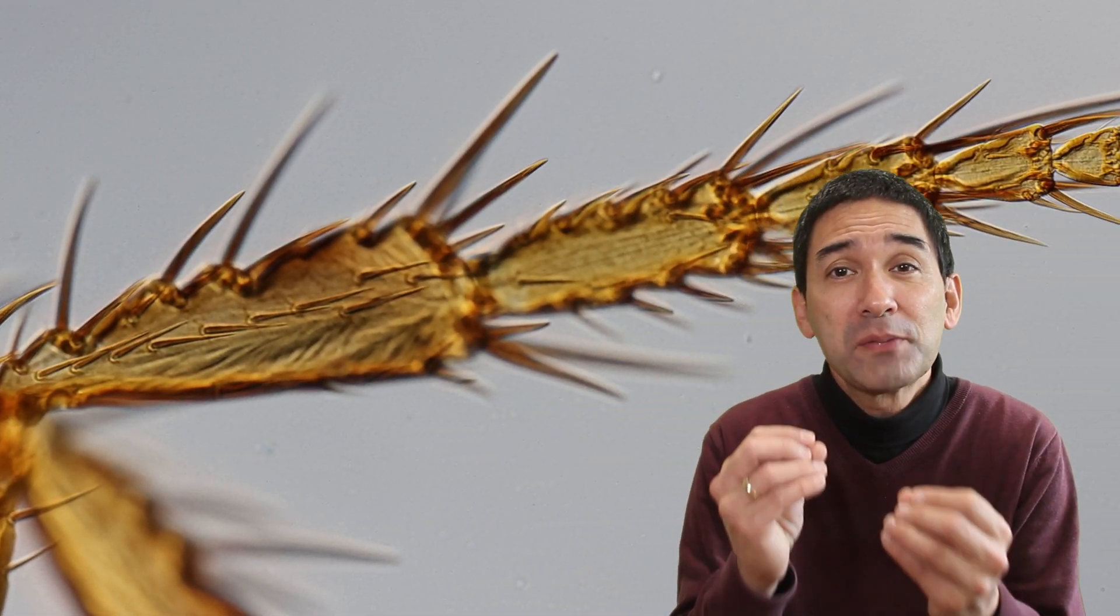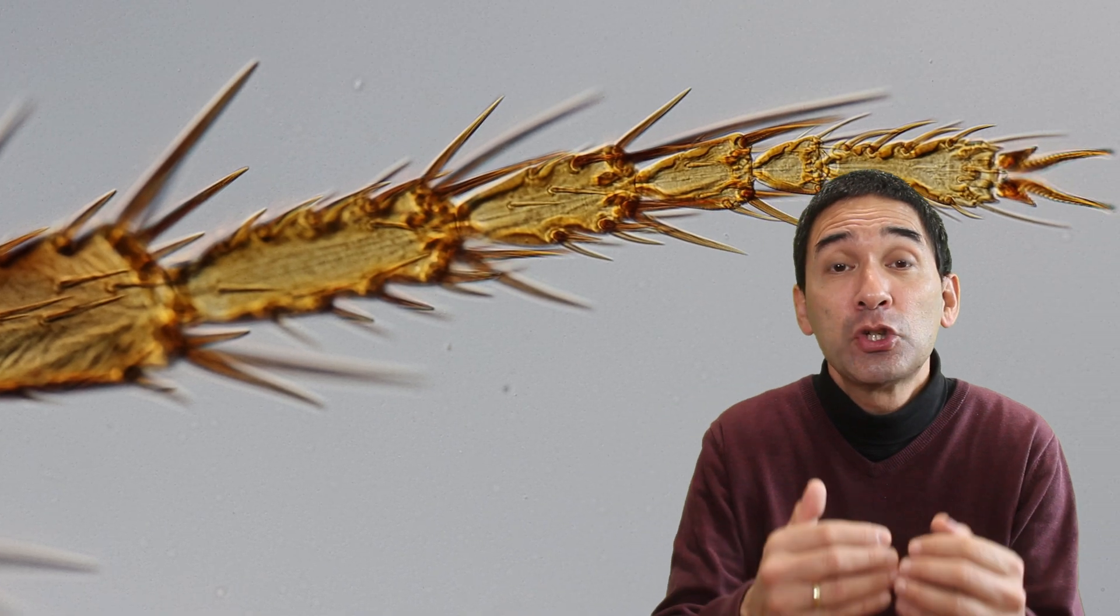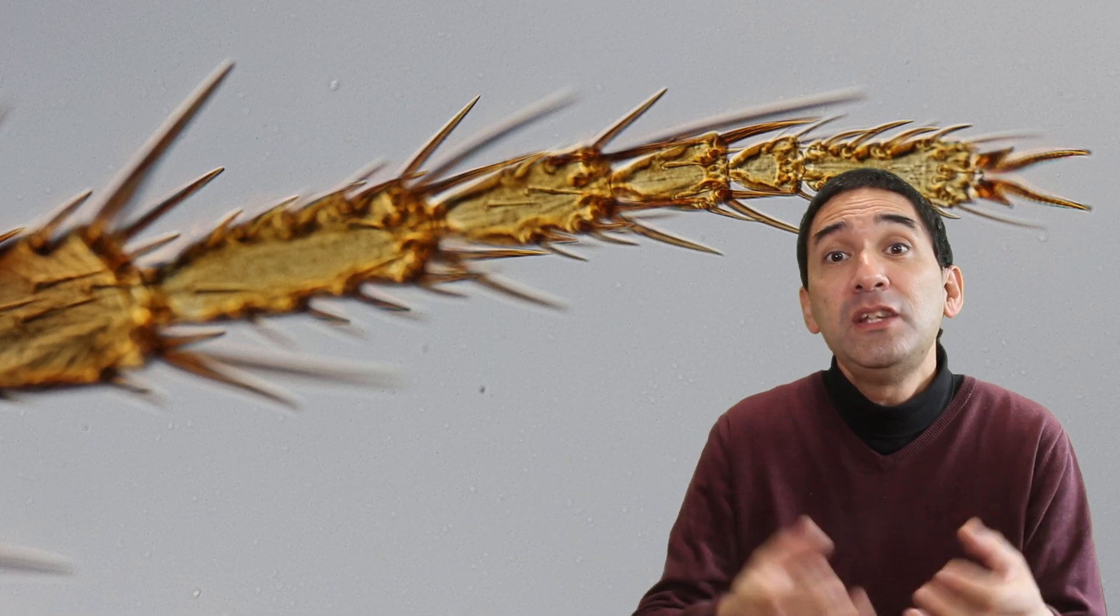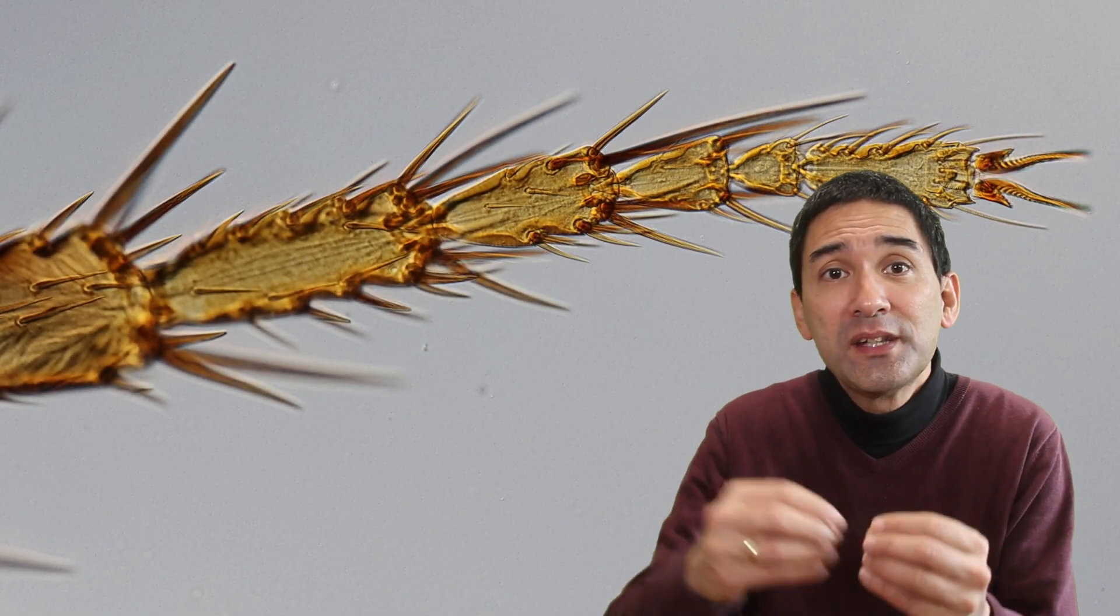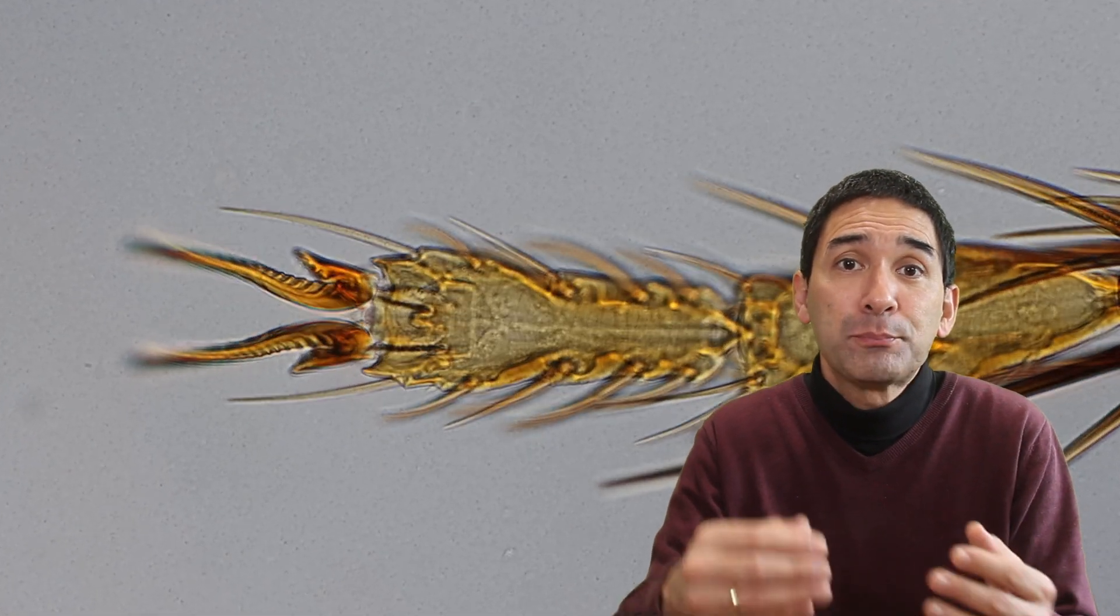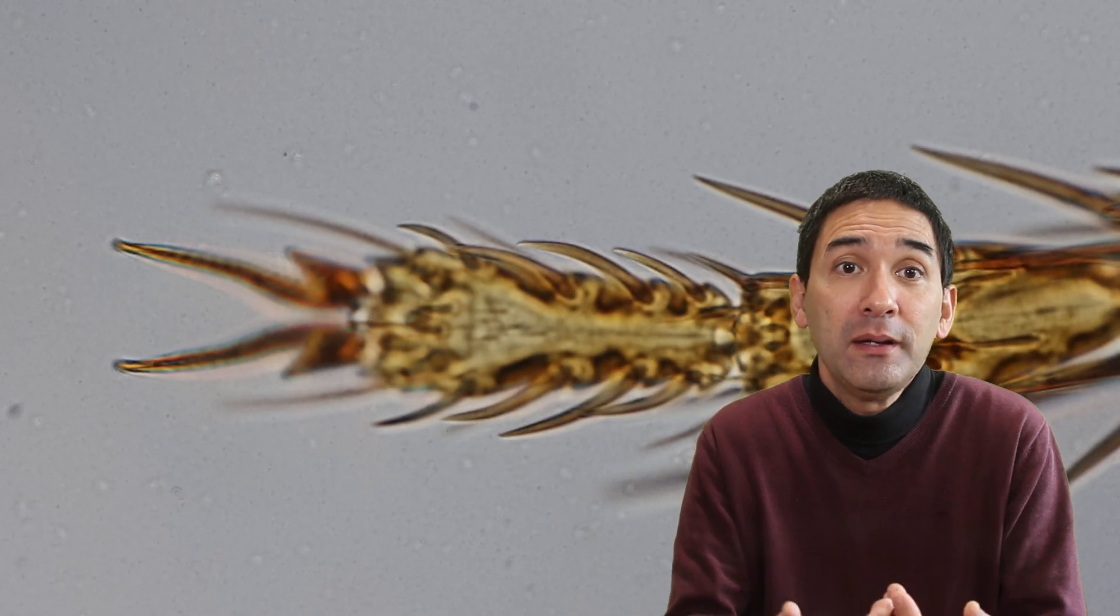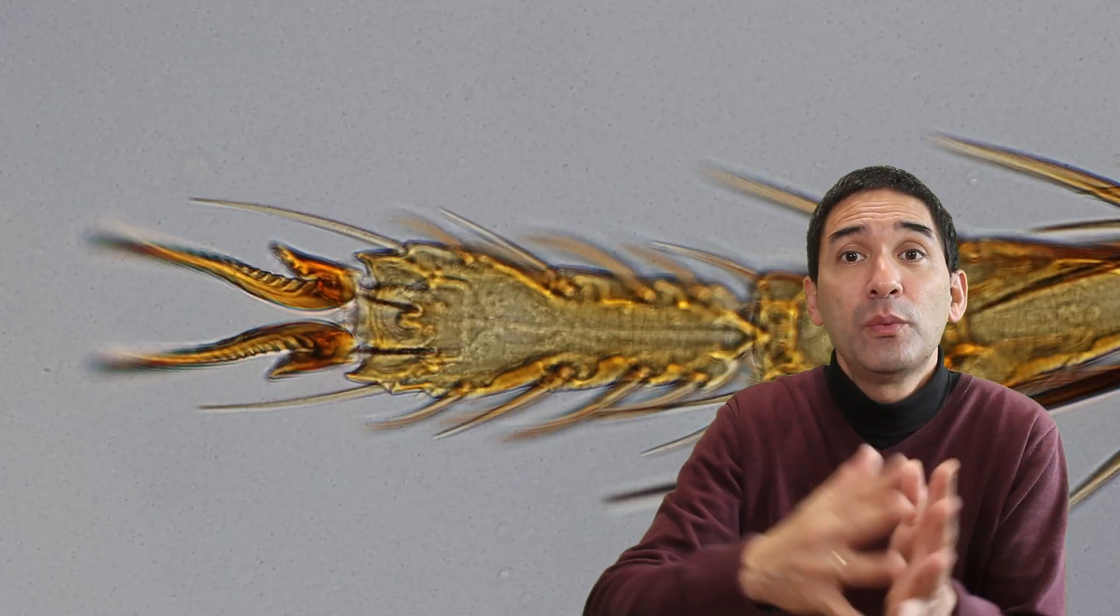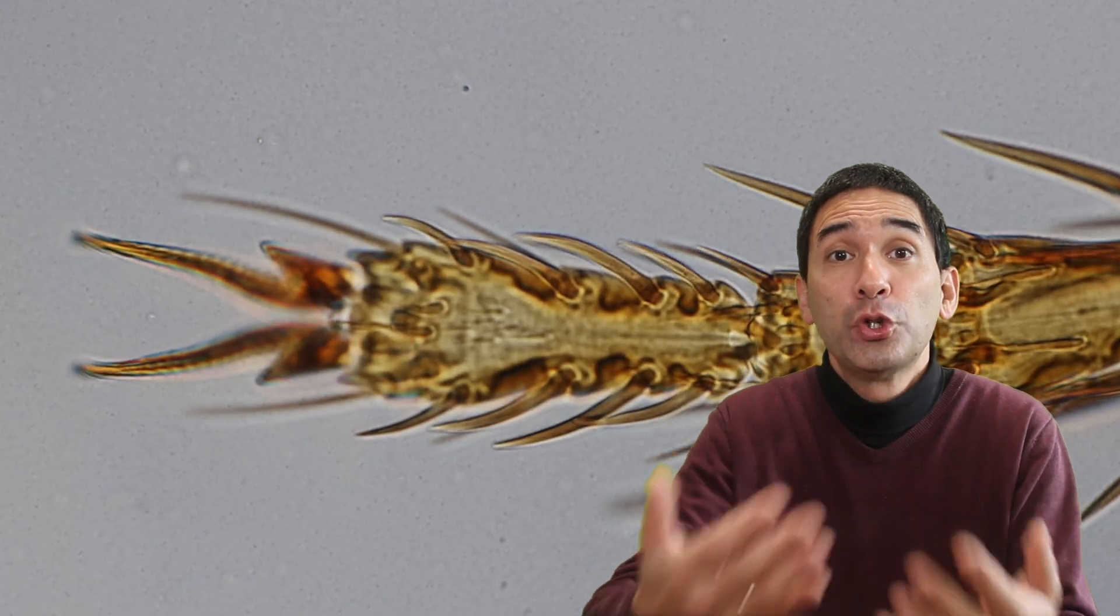For this reason fleas have long spikes on their legs, especially on their hind legs. The flea uses these spikes to anchor itself in the ground when it jumps off. In other words, the spikes prevent the flea from slipping when it jumps. The spikes dig into the surface when it jumps and help to push it off.